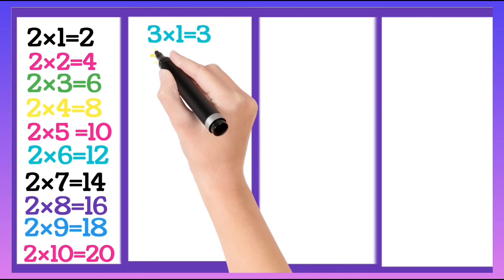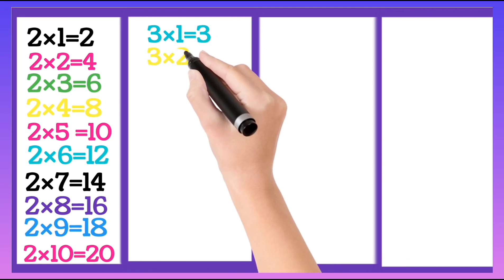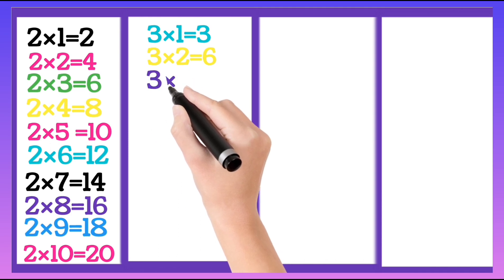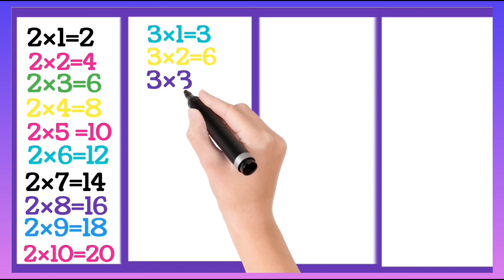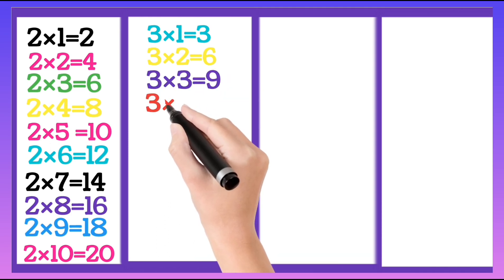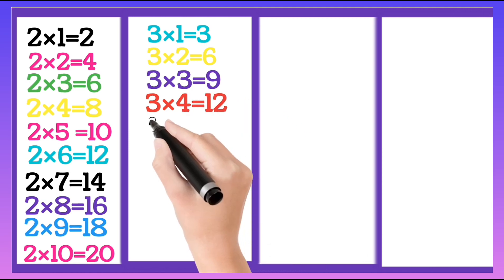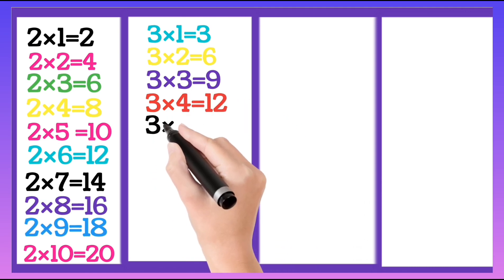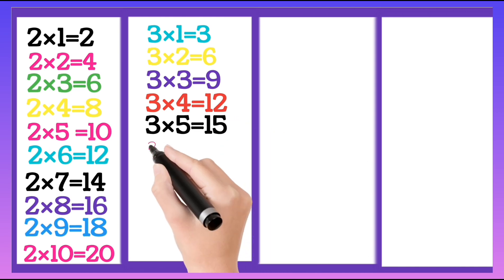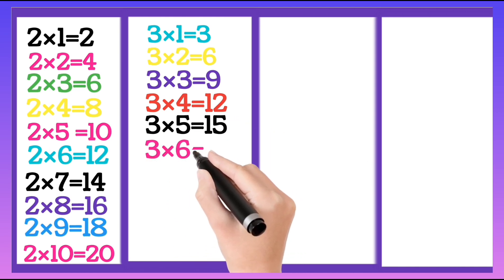Three 1's are 3, three 2's are 6, three 3's are 9, three 4's are 12, three 5's are 15.